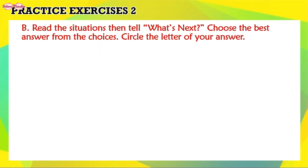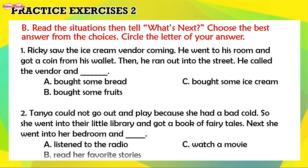Let us now read the situations, then tell what's next. Choose the best answer from the choices. Circle the letter of your answer. 1. Ricky saw the ice cream vendor coming. He went to his room and got a coin from his wallet. Then he ran out into the street. He called the vendor and...